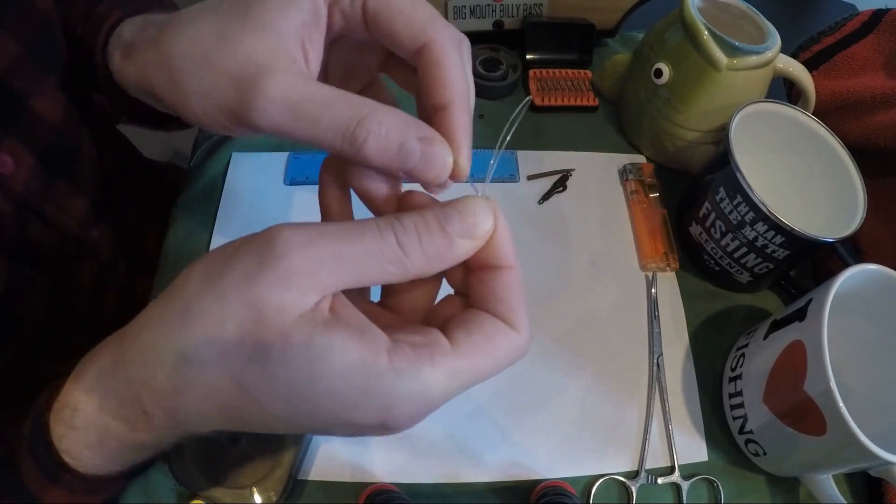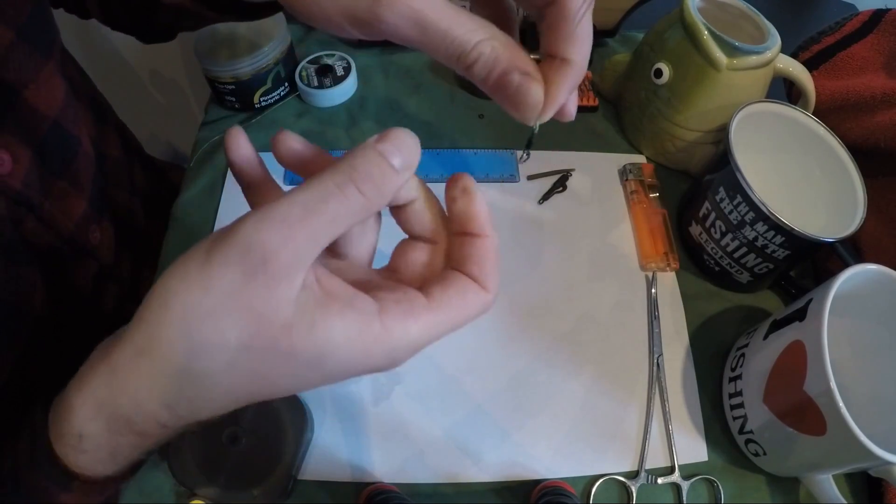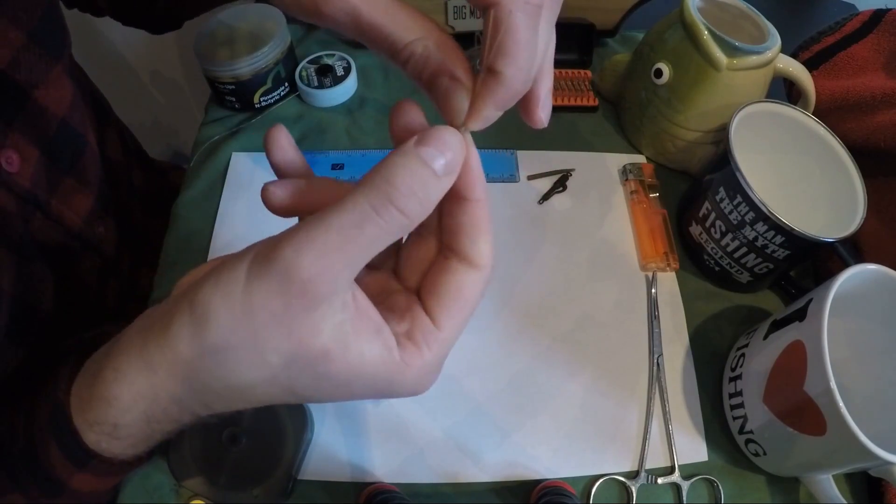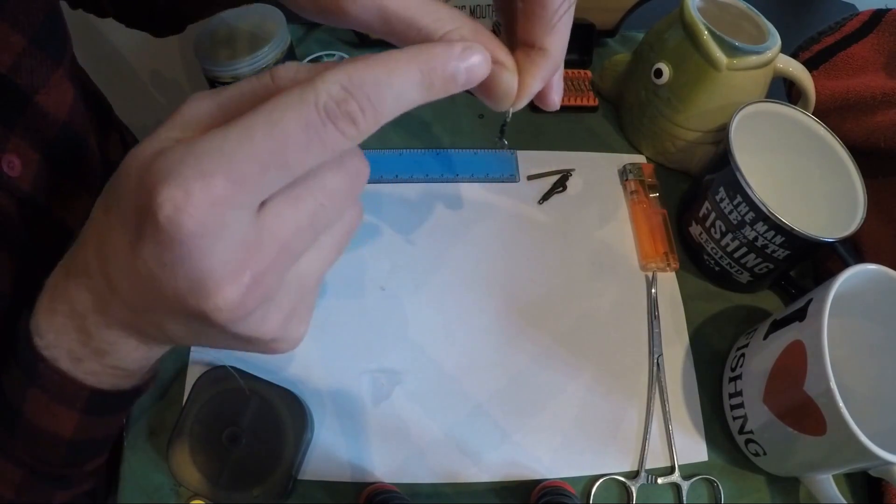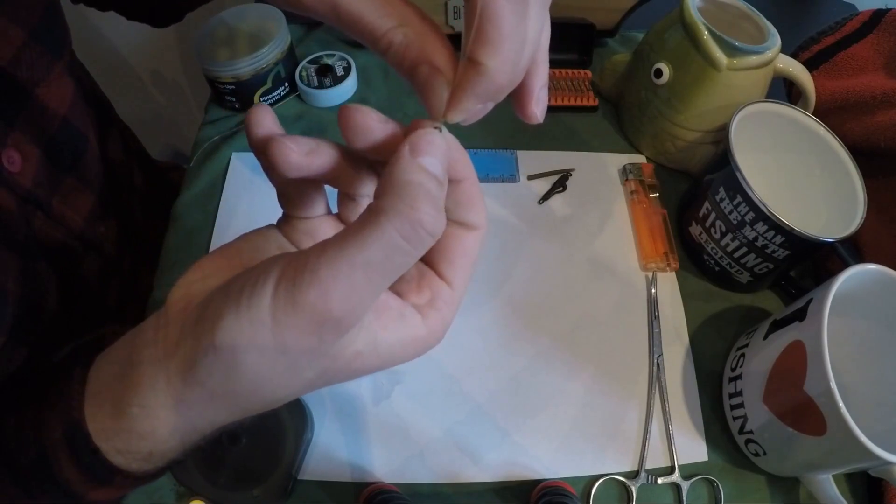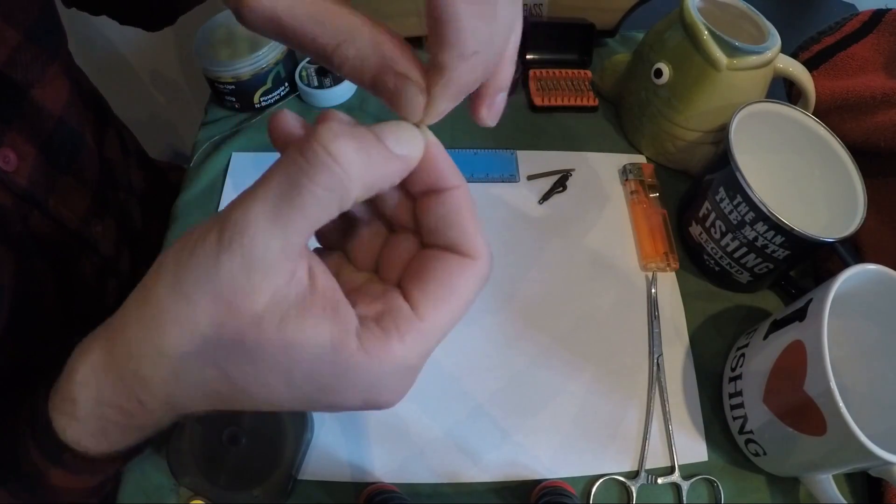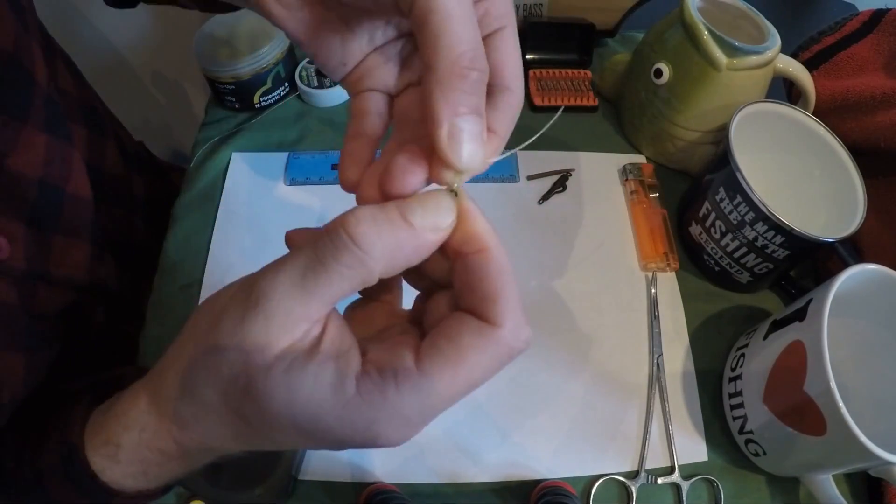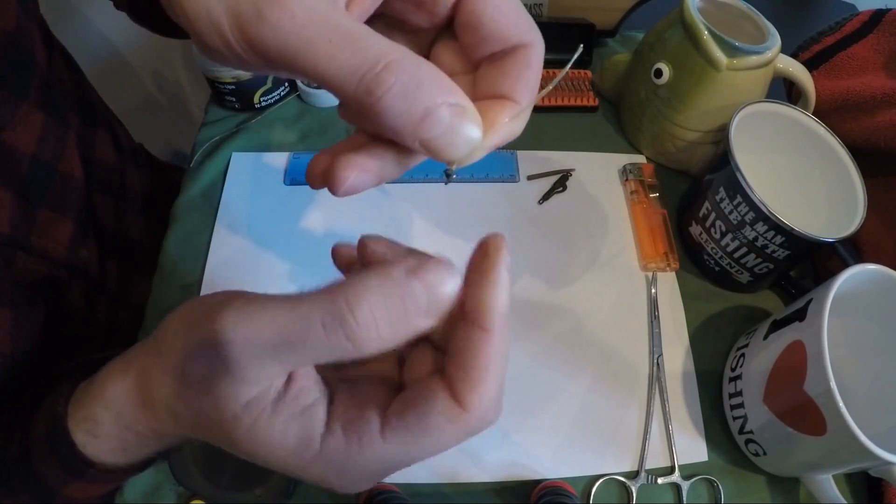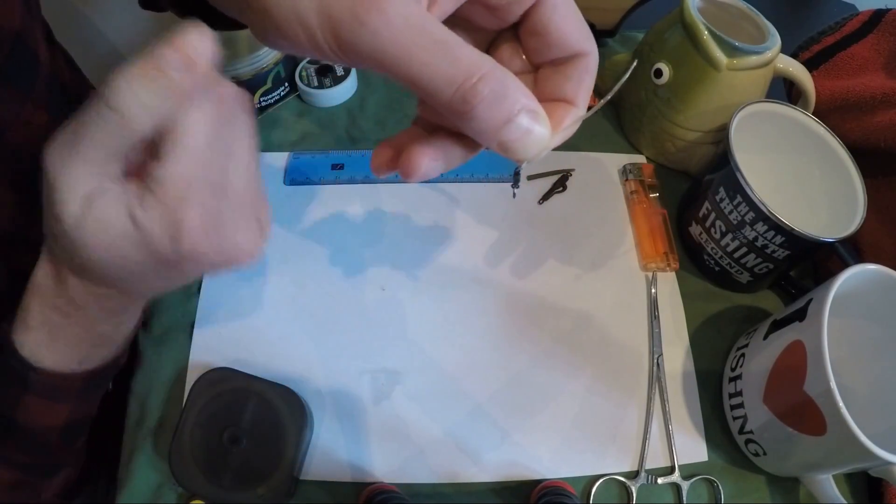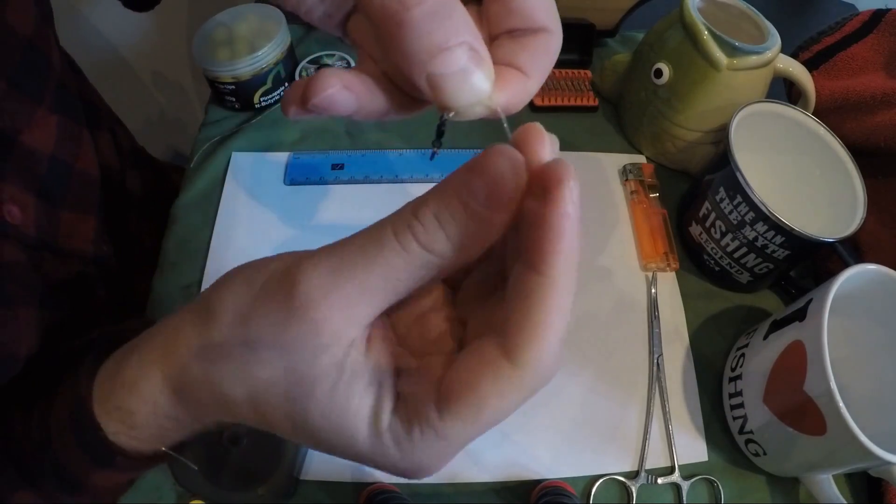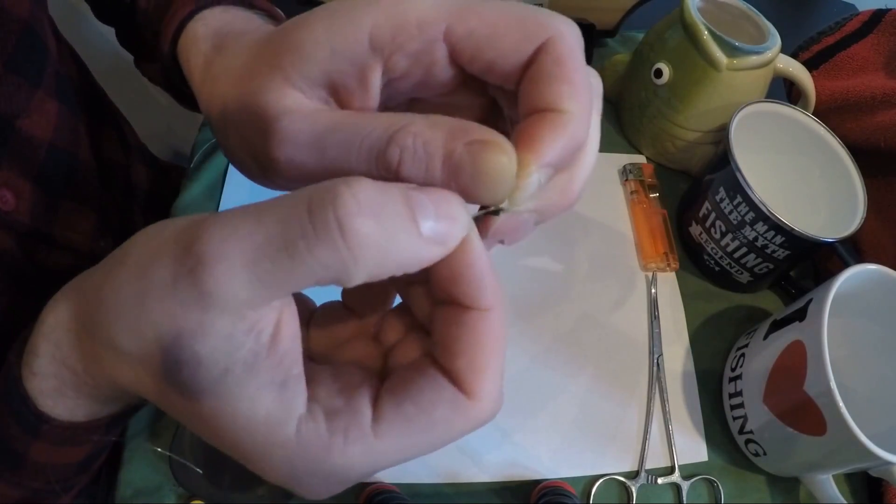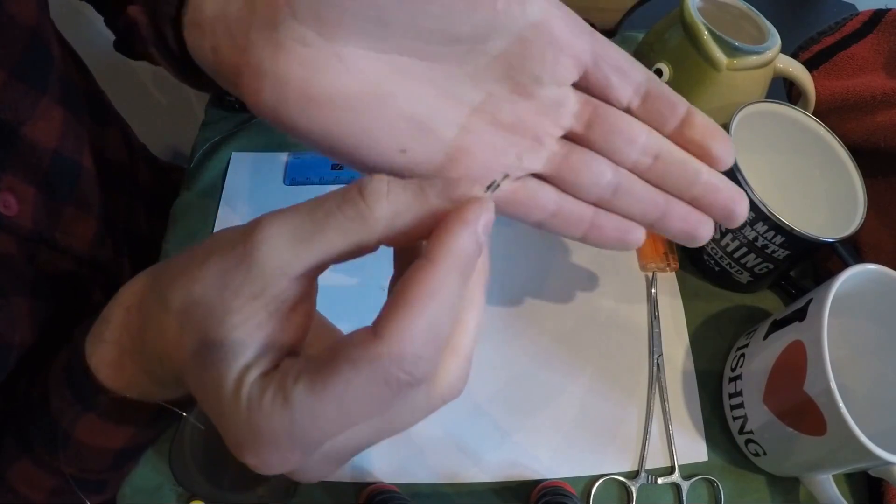So this is a little bit fiddly. What you want to do is rather than try and turn the line around the hook section, what I'll do is pinch it like this and turn the swivel instead. Now if we put both tag ends back through the loop created, that'll be our two-turn blood knot. There we go, pull it down and that's it. That is effectively the knot tied.